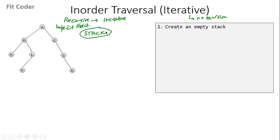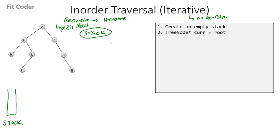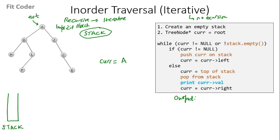Let's see the pseudocode. The first step is we create an empty stack. Then we keep a variable 'current' which is of type tree node and it is pointing to the root of the tree — A is the root, so current is pointing to A. Then we have a while loop which runs while current is not equal to null or the stack is not empty.